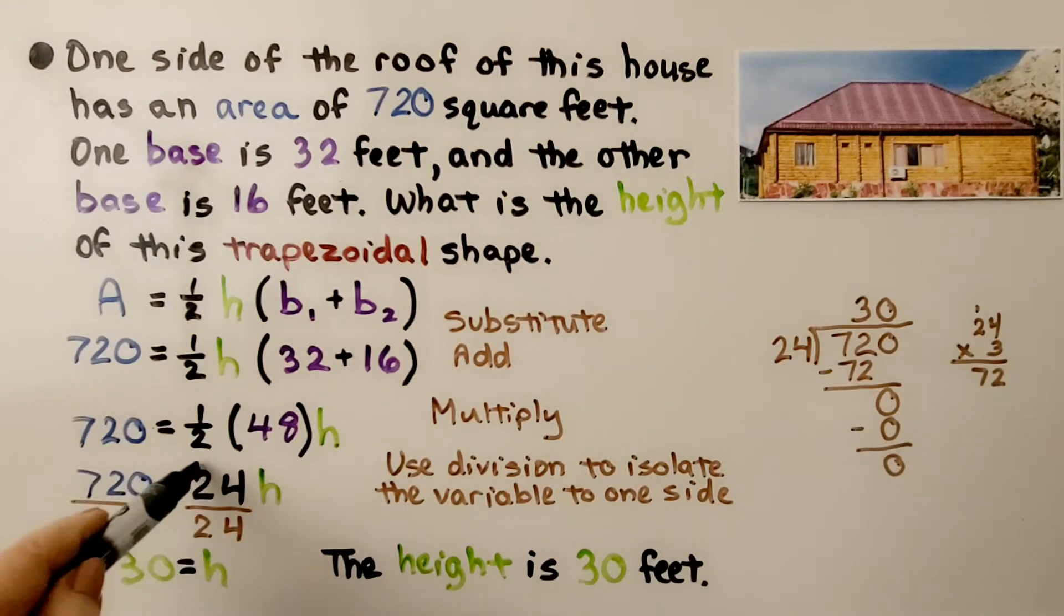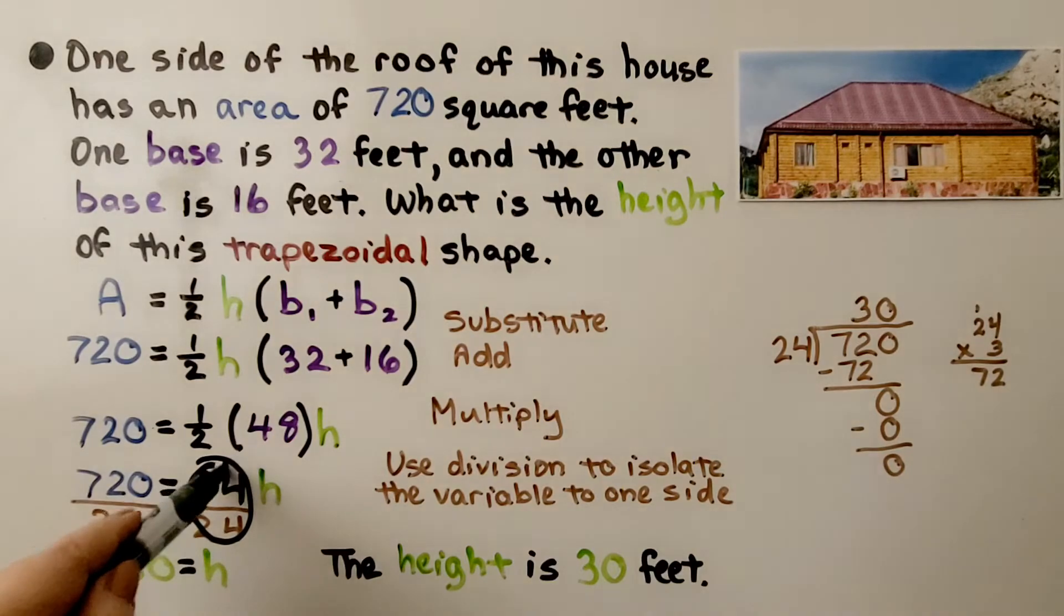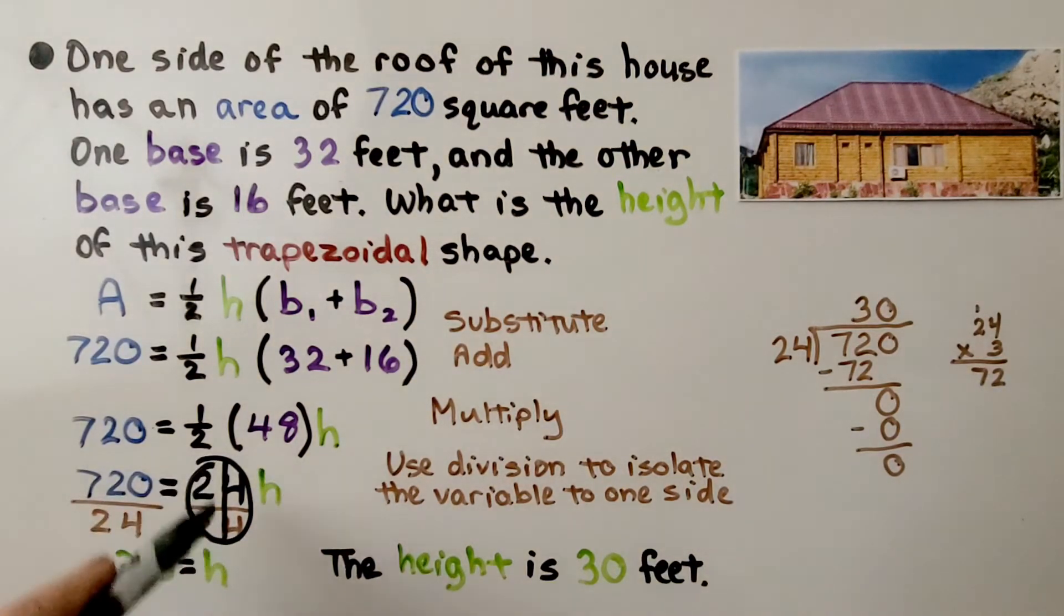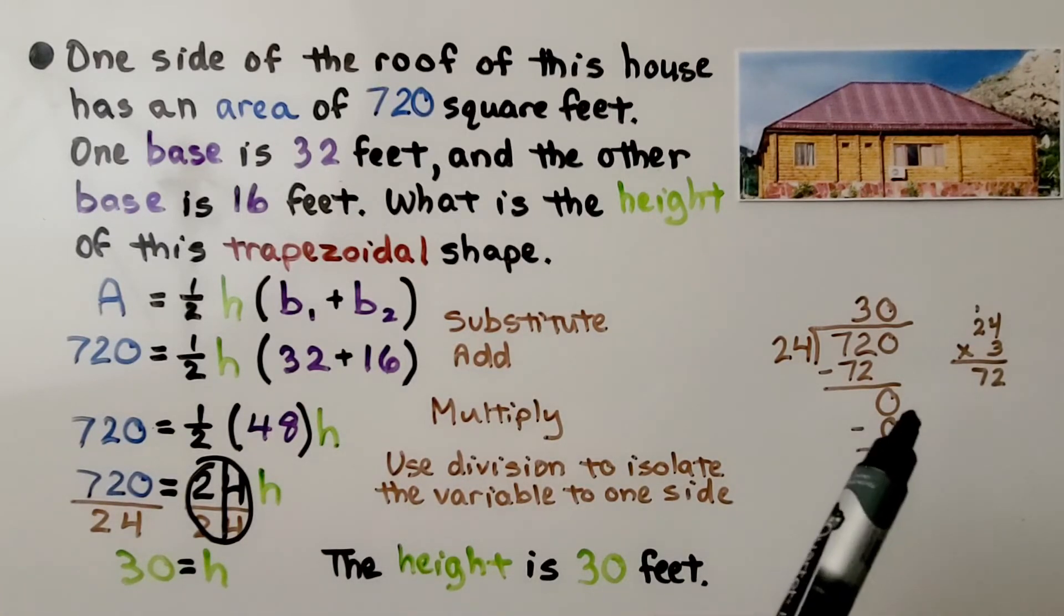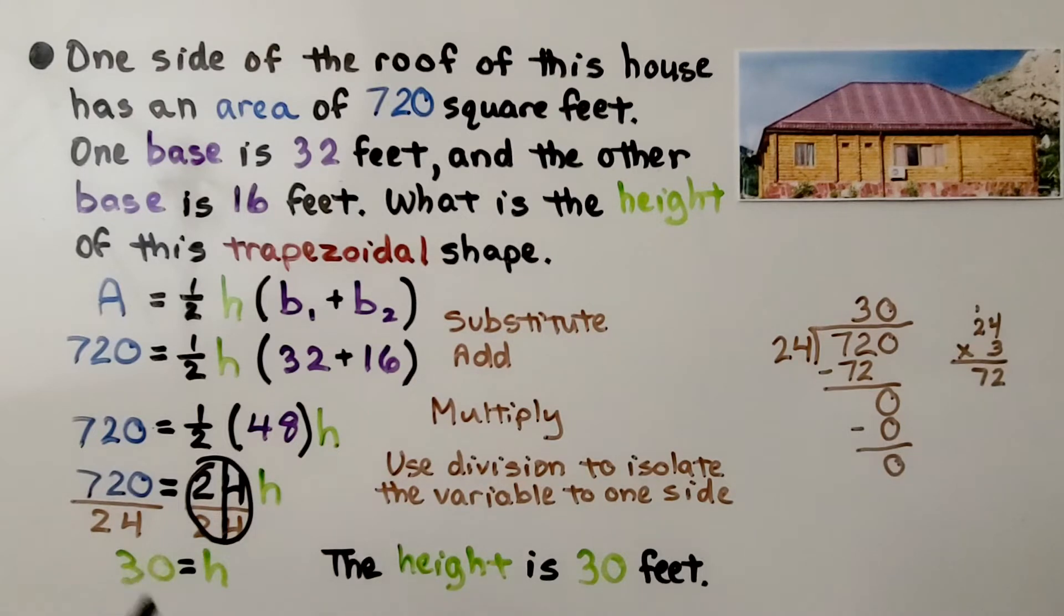That creates our friendly invisible one, same numerator and denominator. We have 1h and 720 divided by 24. We can do a little math on the side. We see that it's 30. The height is 30 feet.